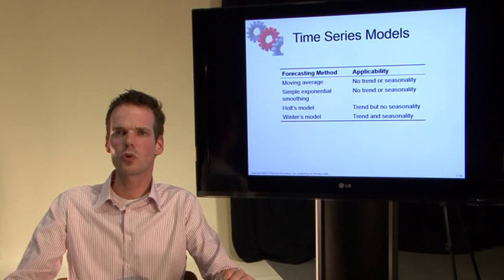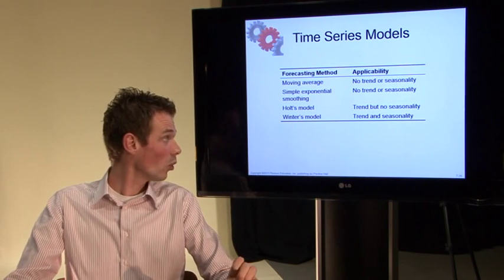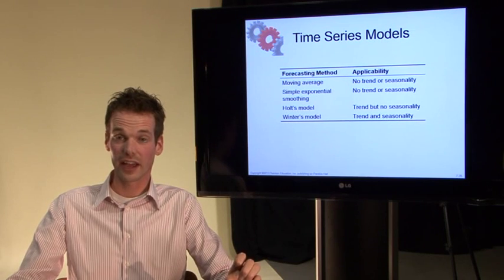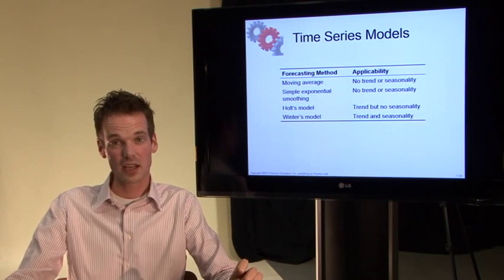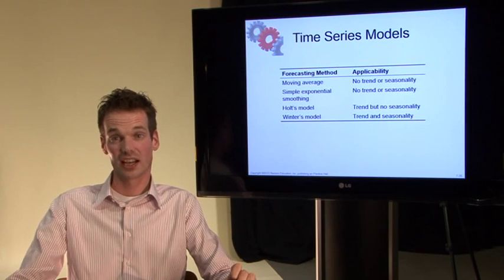With the simple exponential smoothing we used the alpha. The Holtz model had an alpha and a beta and can be used if there is a trend but there is no seasonality.